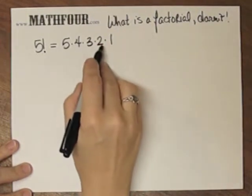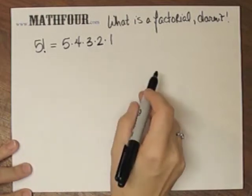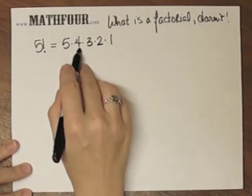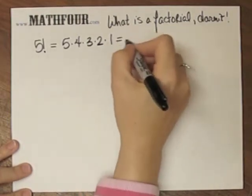So 5 times 4 times 3 times 2 times 1 is what 5 factorial means. So this is 20 times 6, is 120.